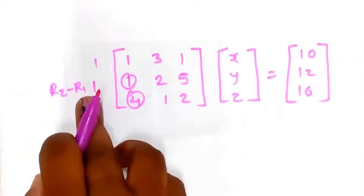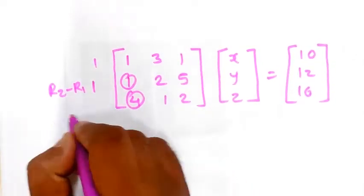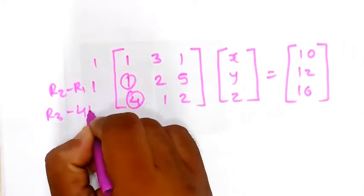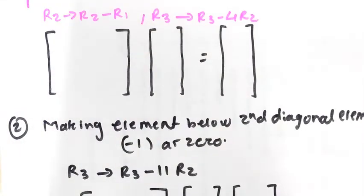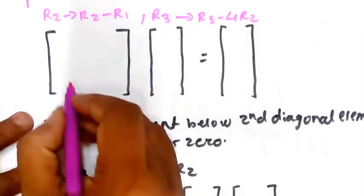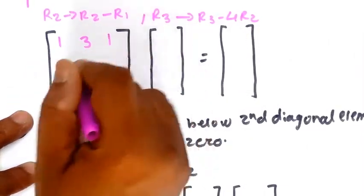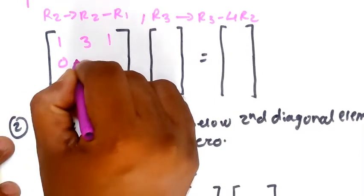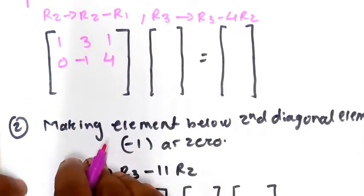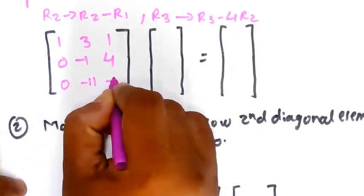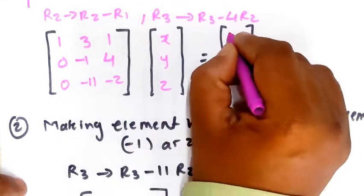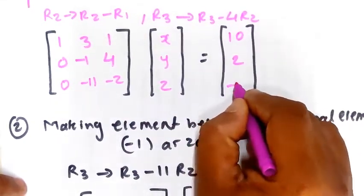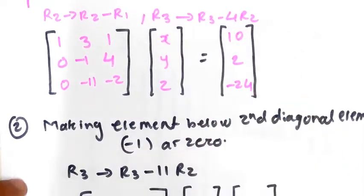Similarly, R3 = R3 - 4*R1 makes the first column element of row 3 equal to zero. After these row transformations, the resulting matrix is [1, 3, 1; 0, -1, 4; 0, -11, -2] with the right-hand side [10, 2, -24].